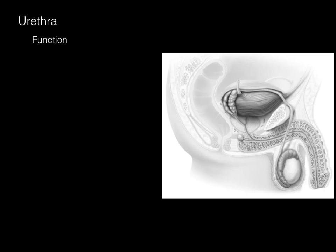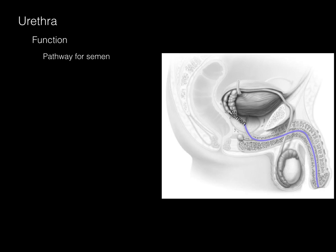The urethra has two functions. First, it provides a pathway for urine from the bladder — urine travels down the urethra and exits through the penis. The second function of the urethra is as a pathway for semen, which comes down the ejaculatory duct and out through the urethra. So in the male reproductive system, both urine and semen share the same pathway.